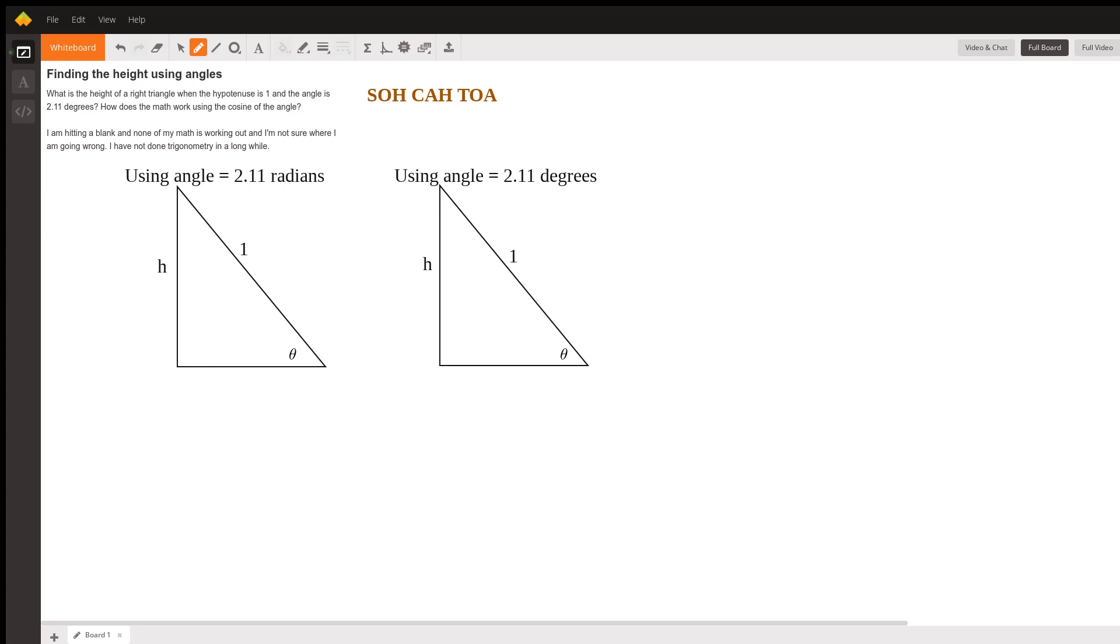You'll be using sine because if you remember way back to geometry, this little acronym SOH CAH TOA means sine is opposite over hypotenuse, cosine is adjacent over hypotenuse, and tangent is opposite over adjacent.